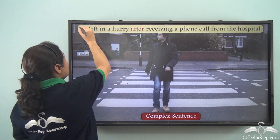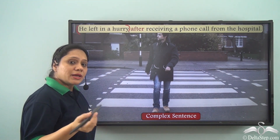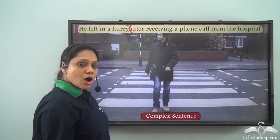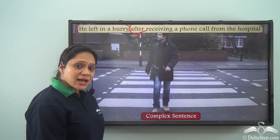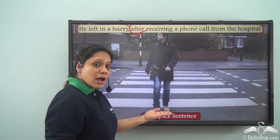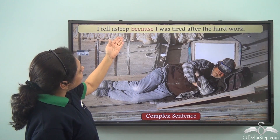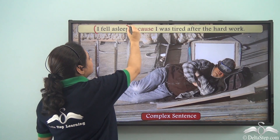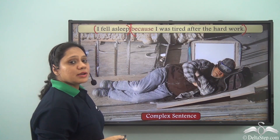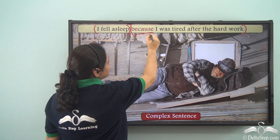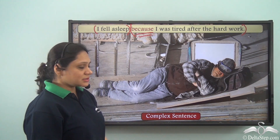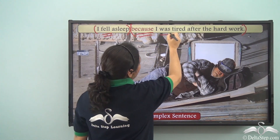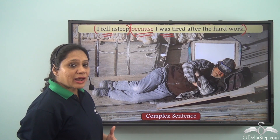In the sentence 'He left in a hurry after receiving a phone call from the hospital', 'he left in a hurry' is the independent clause, joined by the subordinate clause 'after receiving a phone call from the hospital', which starts with the subordinating conjunction 'after'. This is a complex sentence. Similarly, 'I fell asleep because I was tired after the hard work' is also a complex sentence, with 'I fell asleep' as the independent clause and two finite verbs: 'fell' and 'was'.